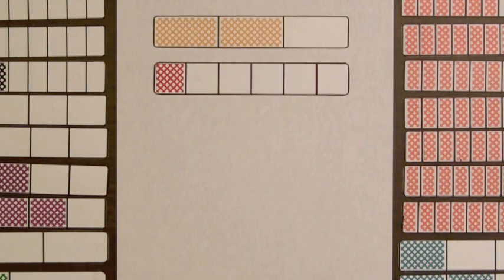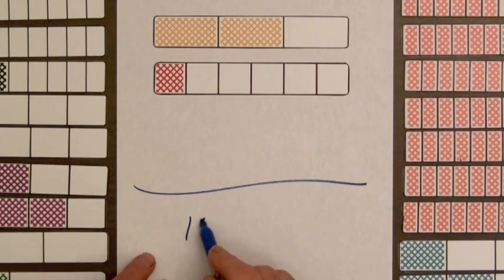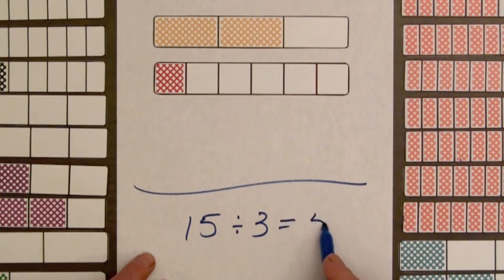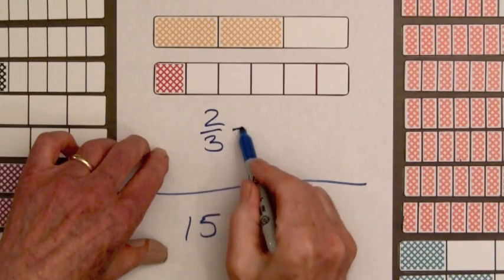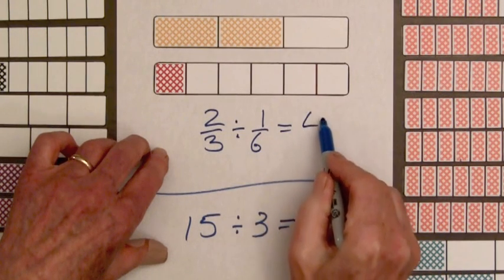The idea of goes into is one way division of whole numbers is taught. For example, how many times does three go into, or divide into fifteen? We write fifteen divided by three equals five. Similarly, we can use the operation of division in this example, two-thirds divided by one-sixth equals four.